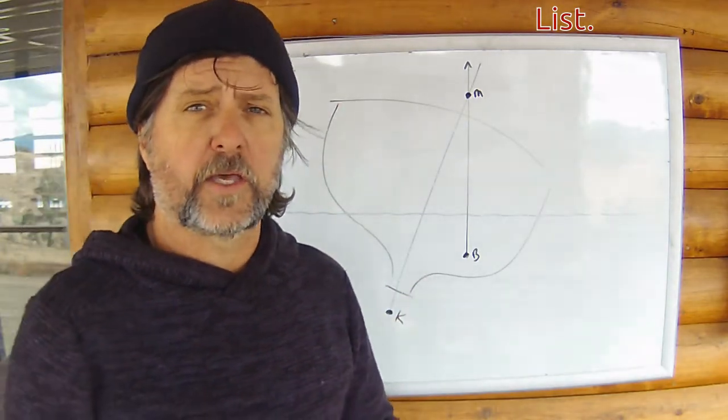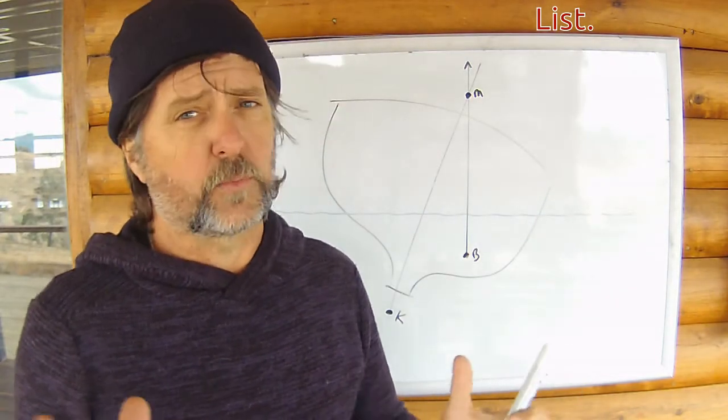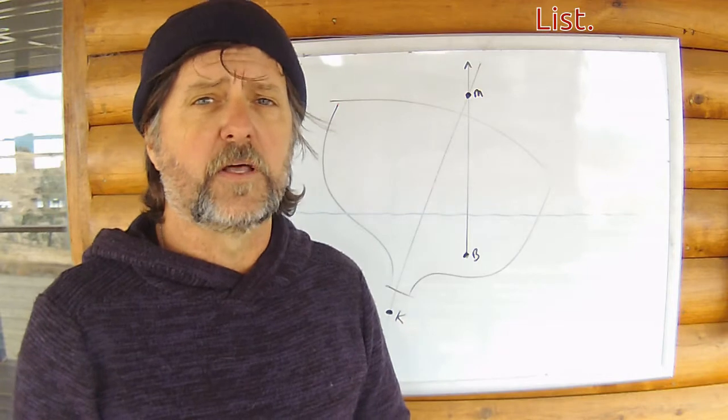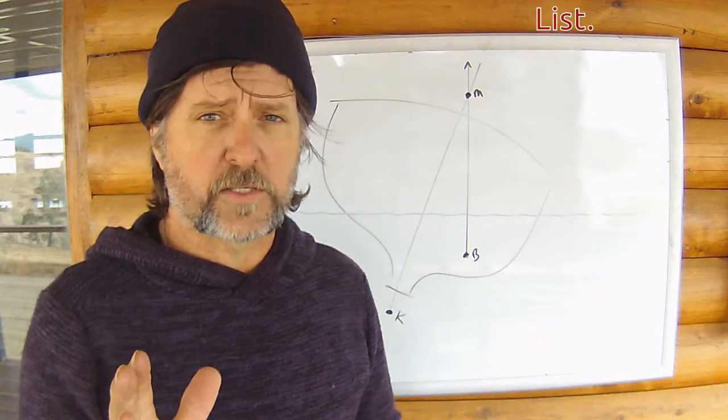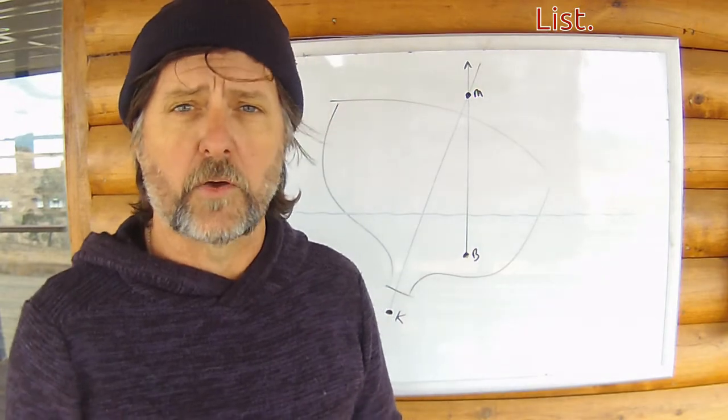A heeled vessel that we've just been looking at is inclined over to one side due to an external force, wind and waves. A listed vessel is going to incline to one side due to an internal force, due to some sort of asymmetric loading condition.